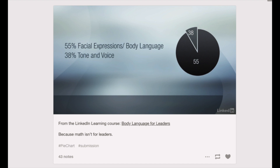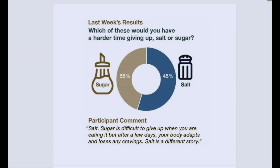Let's go through a couple of examples. This LinkedIn ad is trying to compare facial expression and body language to tone and voice, and the percentages say 55% to 38% — but that pie chart is an egregious, bad representation of those percentages. Here's another example: participants were asked what's harder to give up, salt or sugar. The pie chart says 55% say it's harder to give up sugar and 45% say salt.